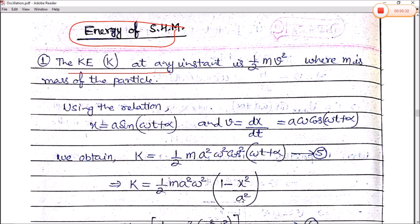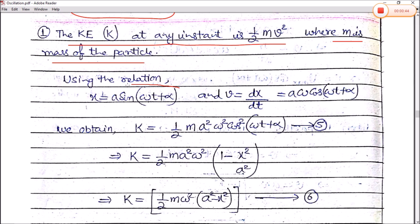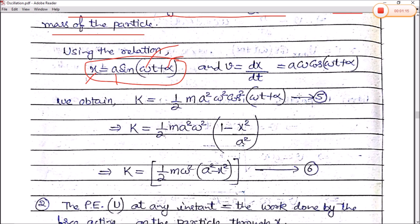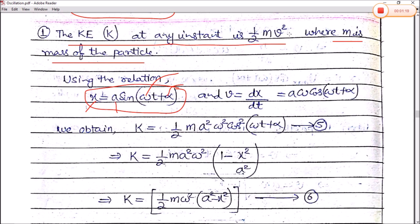The kinetic energy at any instant is half mv², where m is the mass of the particle and v is the velocity of the particle. As we derived in the last video, the displacement of simple harmonic motion is x = a sin(ωt + α), where ω is the angular velocity, α is the phase, and a is the amplitude. Its velocity v = dx/dt = aω cos(ωt + α). So kinetic energy k = ½mv² = ½m a²ω² cos²(ωt + α). This is equation number 5.